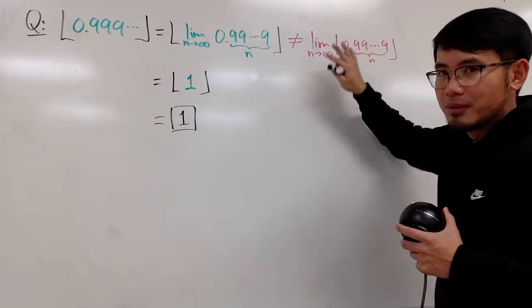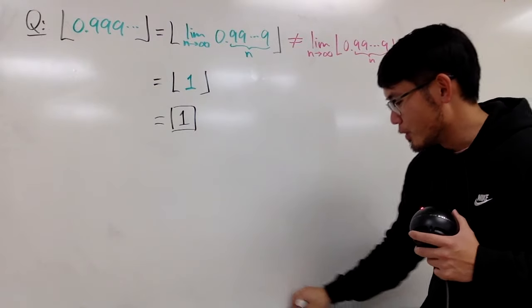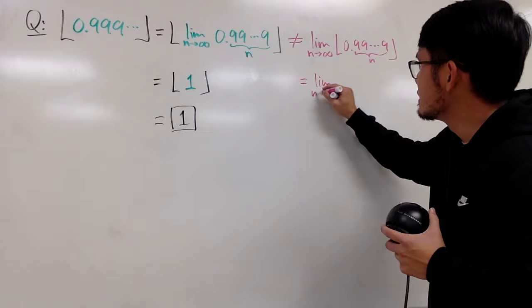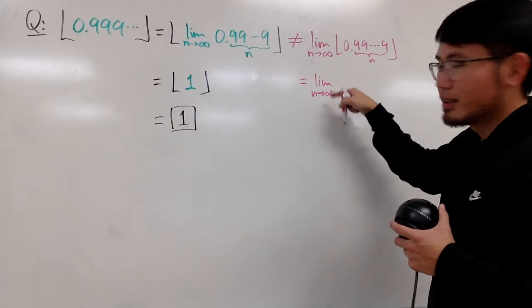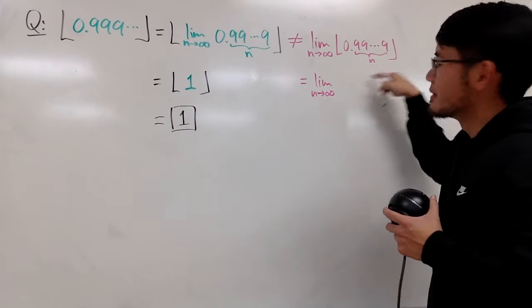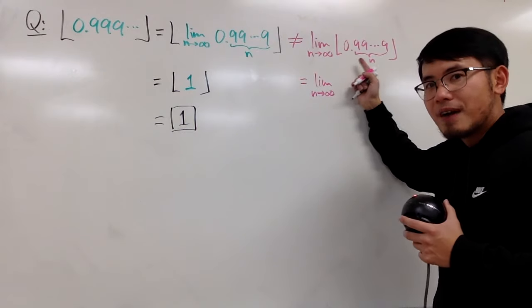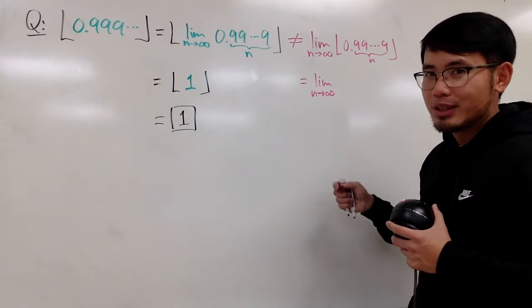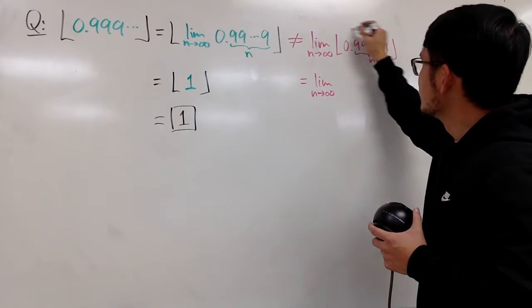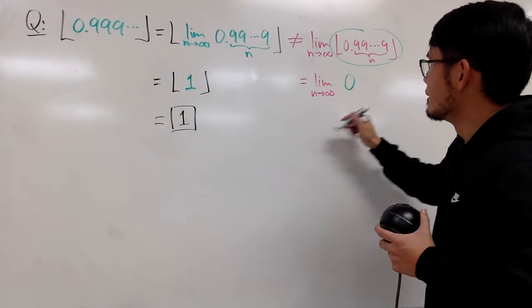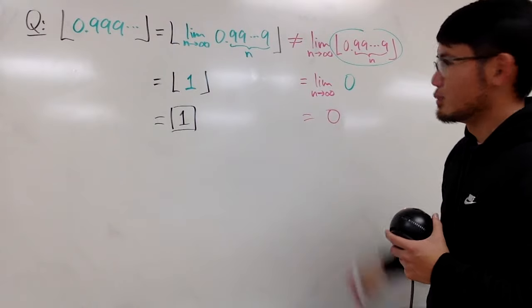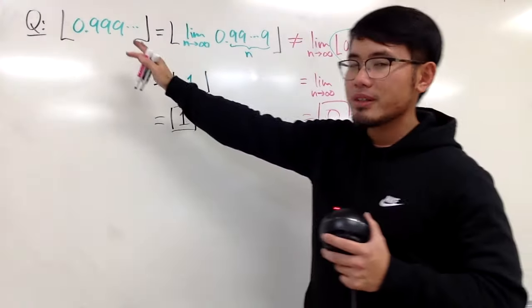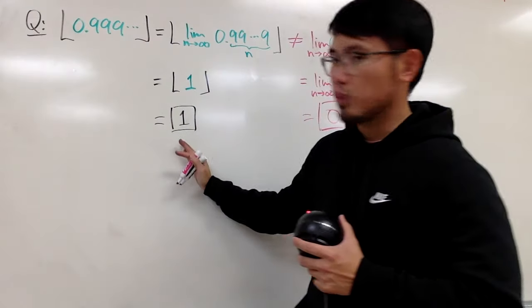If somebody gives you this in the limit form, this right here will have been, well, you have to take the limit here first. Well, on the outside, I mean, you have to write it down right here, but you have to do this first. But, when you have finite amount of nines after the decimal point, and you take the floor of that, you get 0. So, all this right here is 0. And, in here, you end up with 0. But, as I said, originally the question was written this way, so this would be the answer.